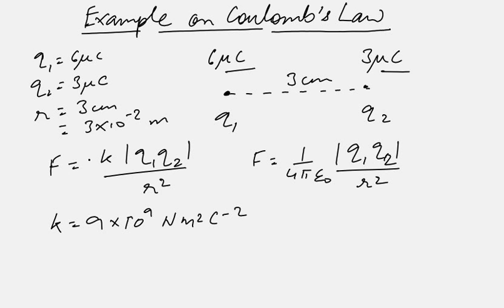In this example we will use the first formula of Coulomb's law because k is in the numerator. If we use the second formula with ε₀, then the quantity 8.854 × 10⁻¹² will appear in the denominator and that will be difficult for calculation.